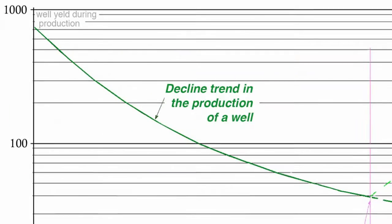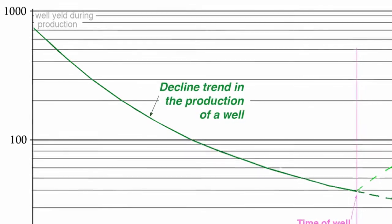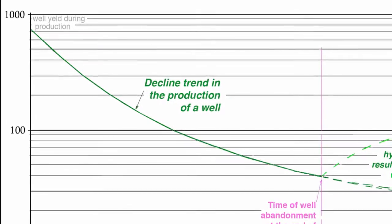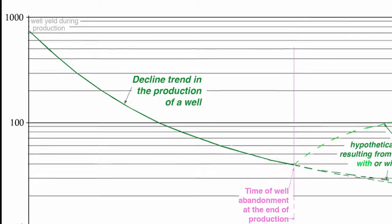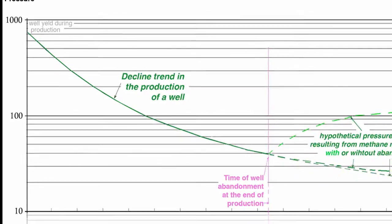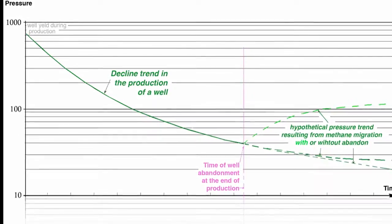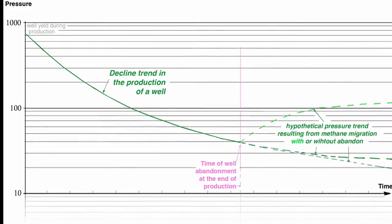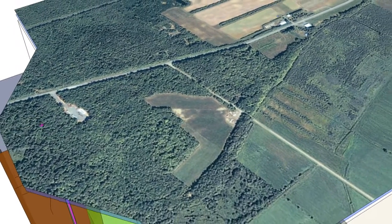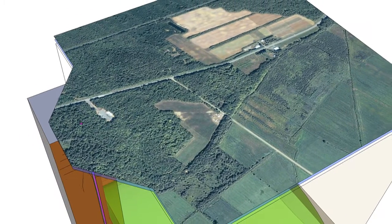That is the reason that the production curve of a well shows a downward curve with a hyperbolic exponent. The flow never goes to zero in this type of curve, except at infinity on the time axis. When the profitable production is over after a few years, there is still 80% of the methane in the shale, which continues this slow process.